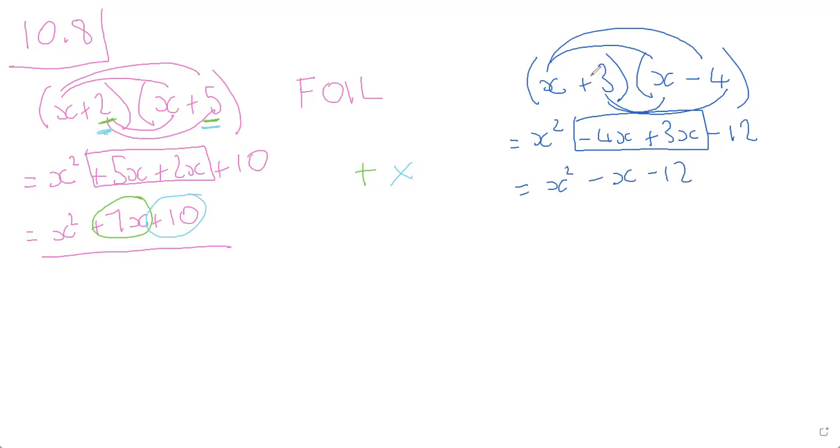So again same thing is true. You add together the two numbers. If we add 3 and negative 4 we get negative 1. And then if we multiply 3 and negative 4 we get negative 12. So it still works. If you can't remember the shortcut it doesn't matter. You just use the FOIL acronym and you always get the right answer. But if you want to jump to the last bit you can.